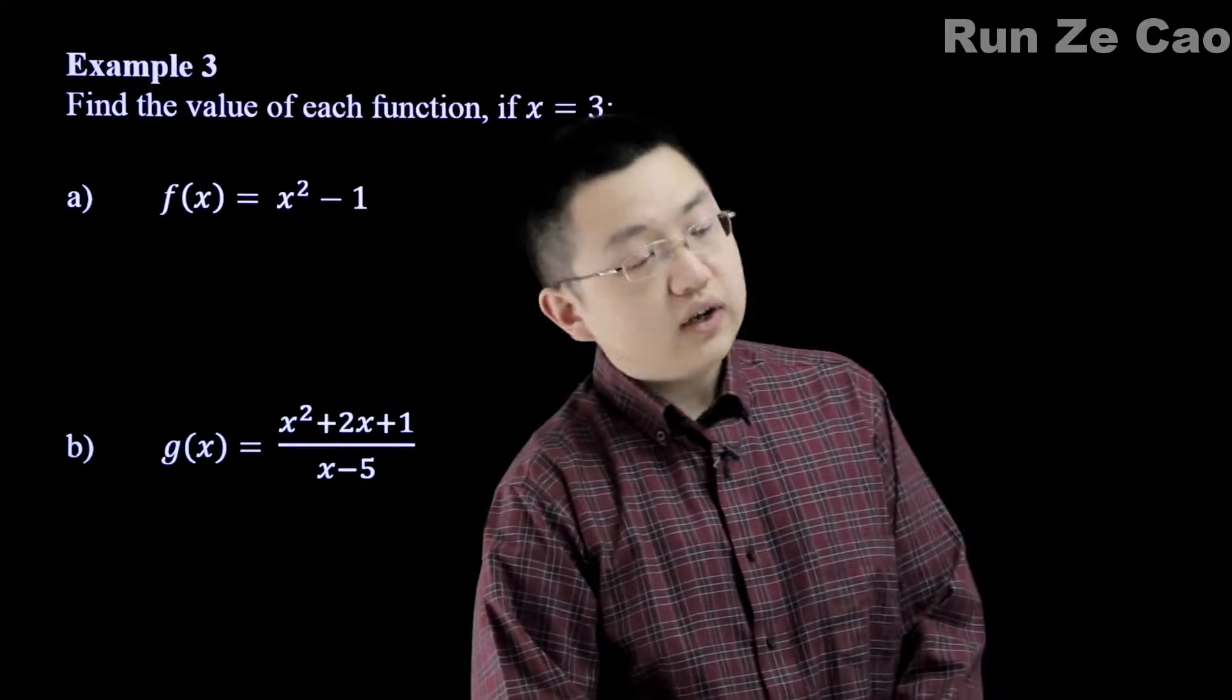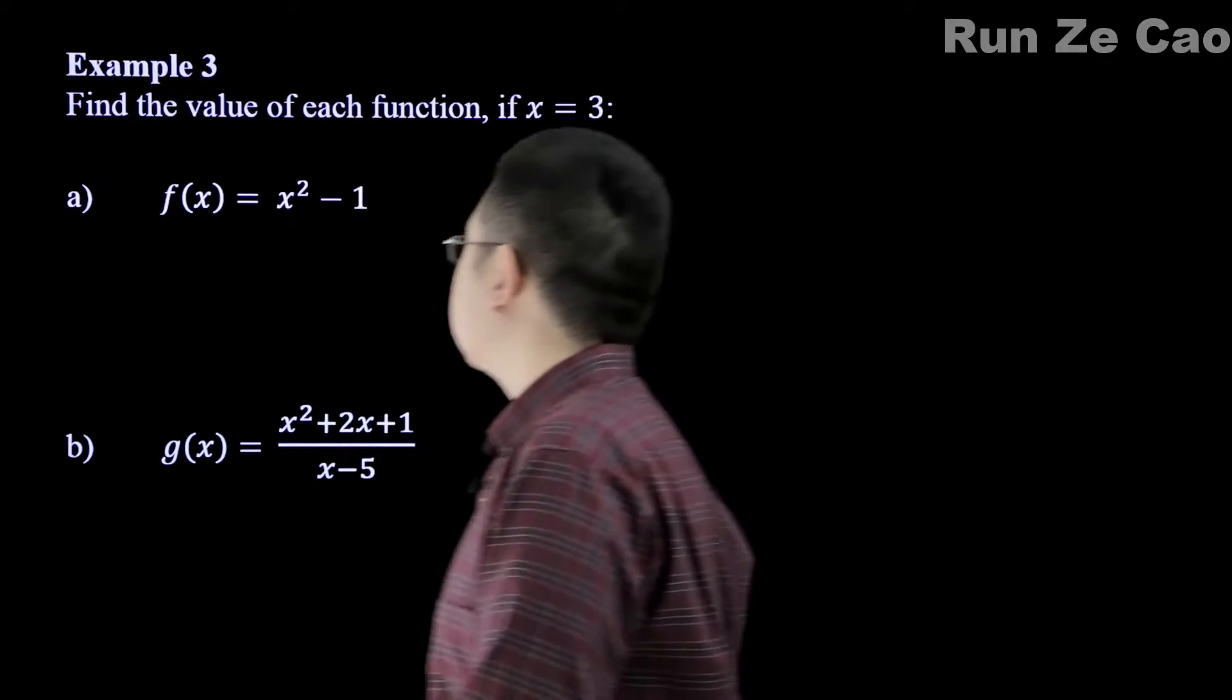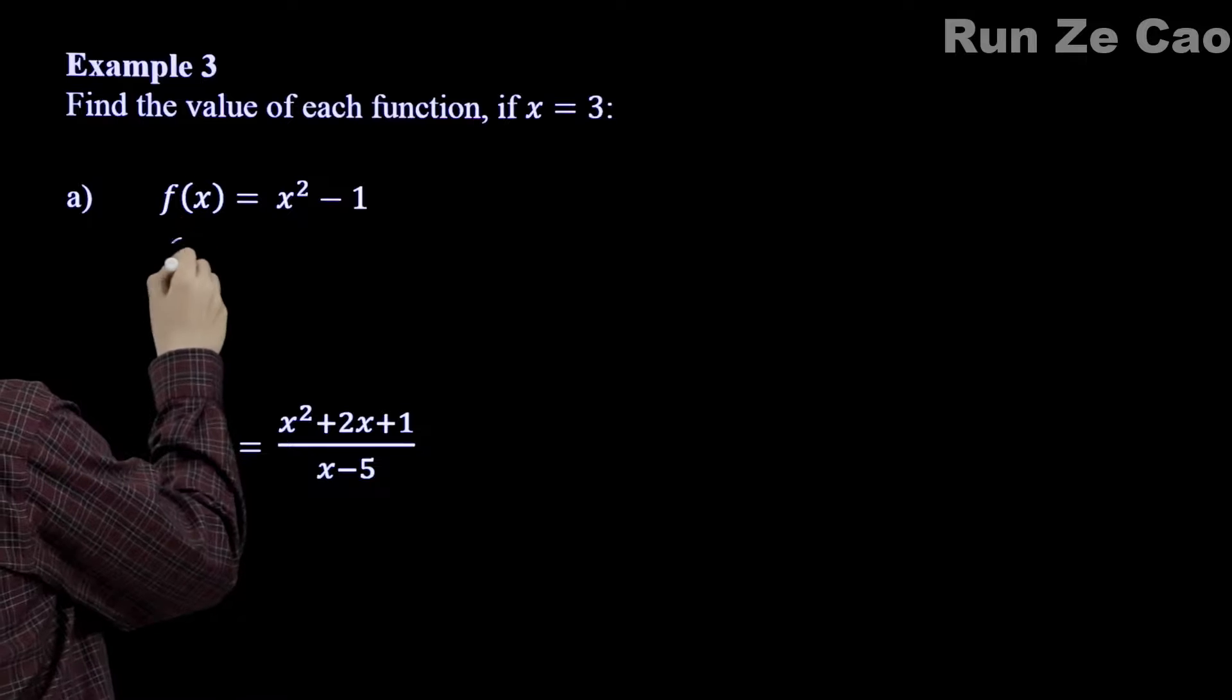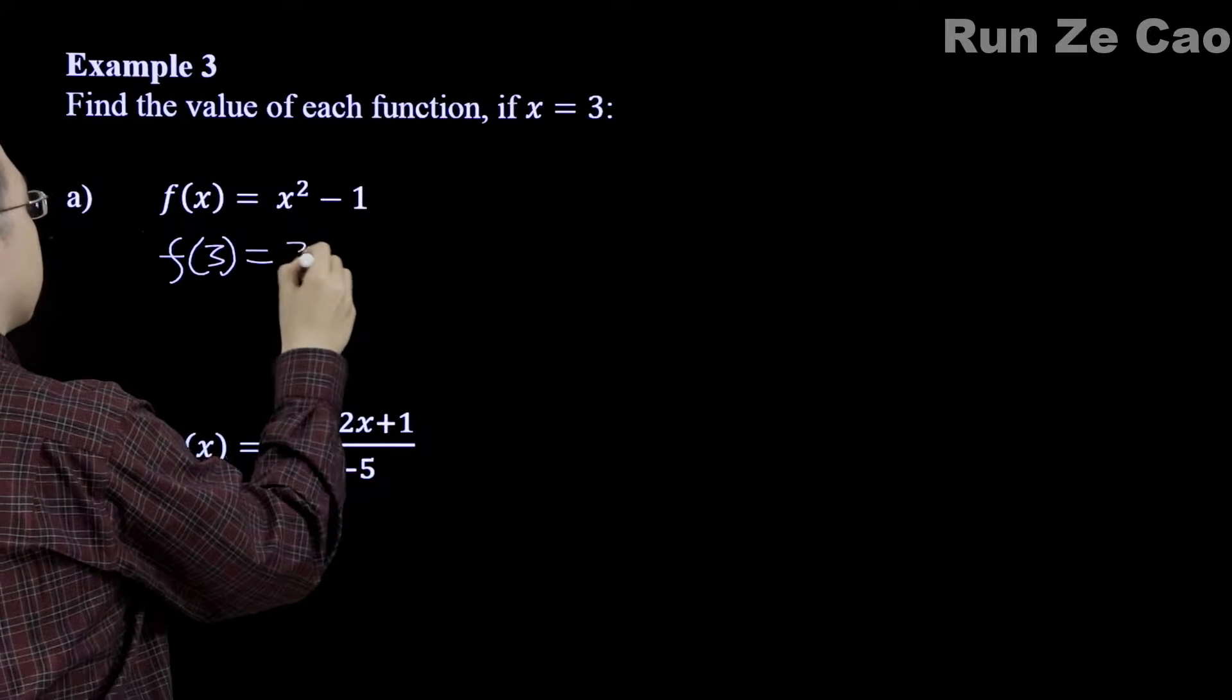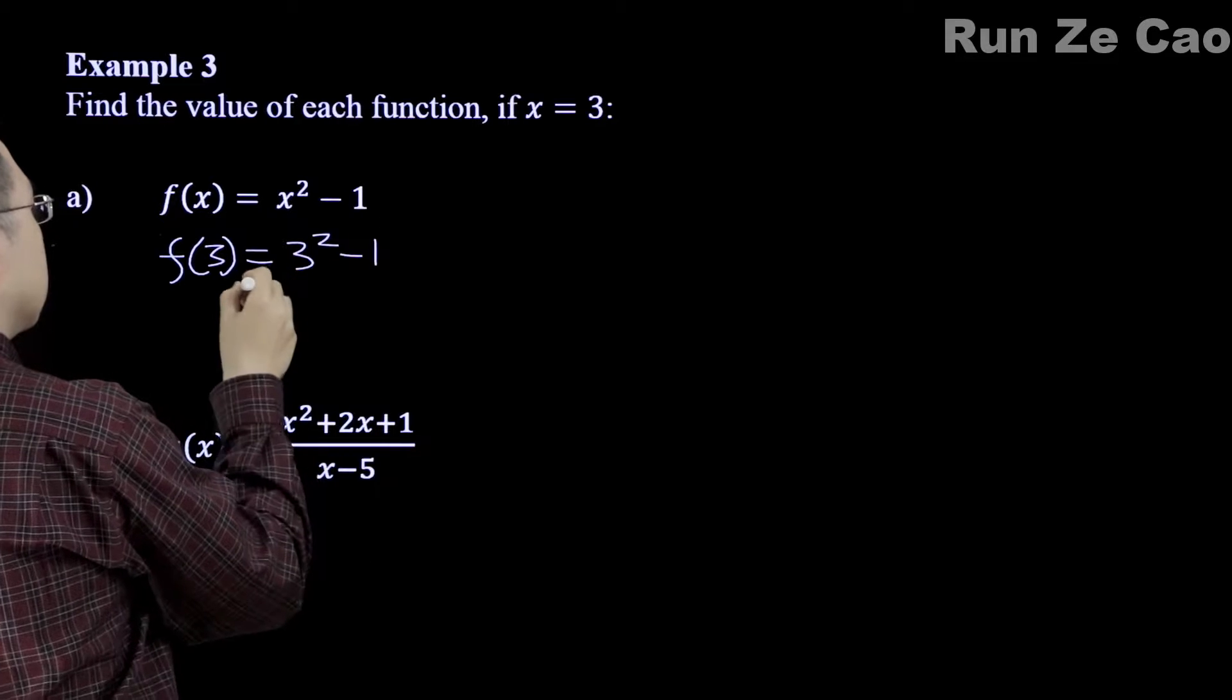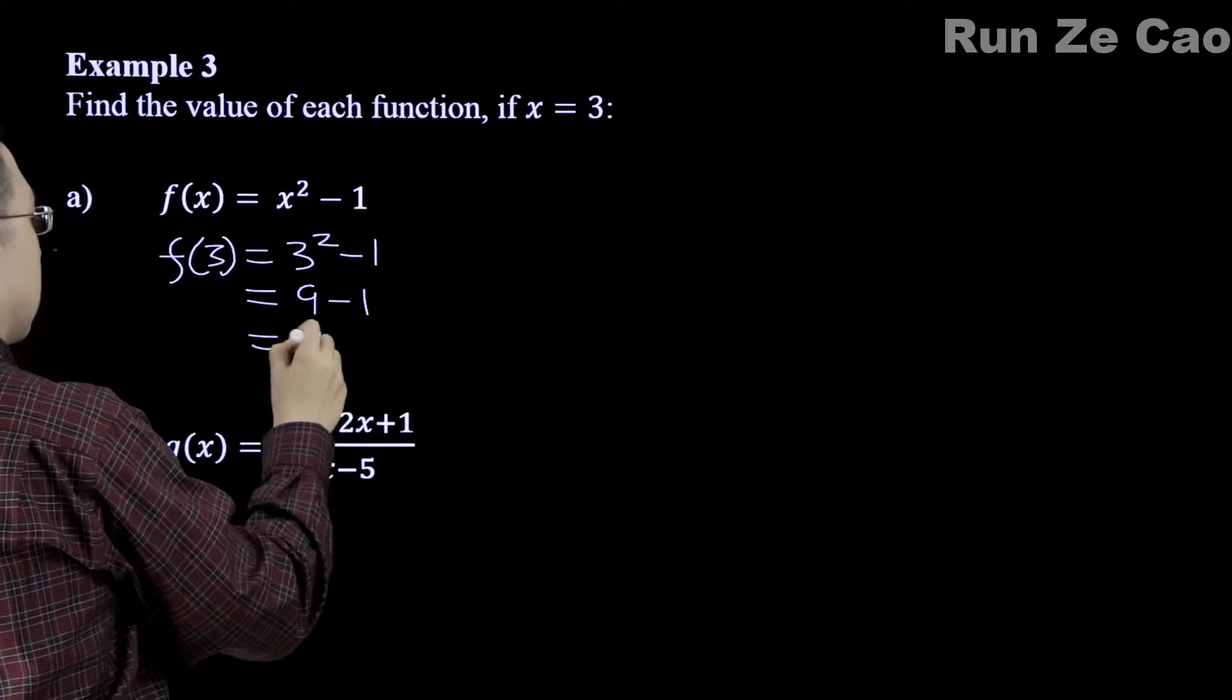Okay, example 3, find the value of each function if x equals 3. Well, here, we would have f(3) is equal to 3 squared minus 1 equals 9 minus 1 equals 8.